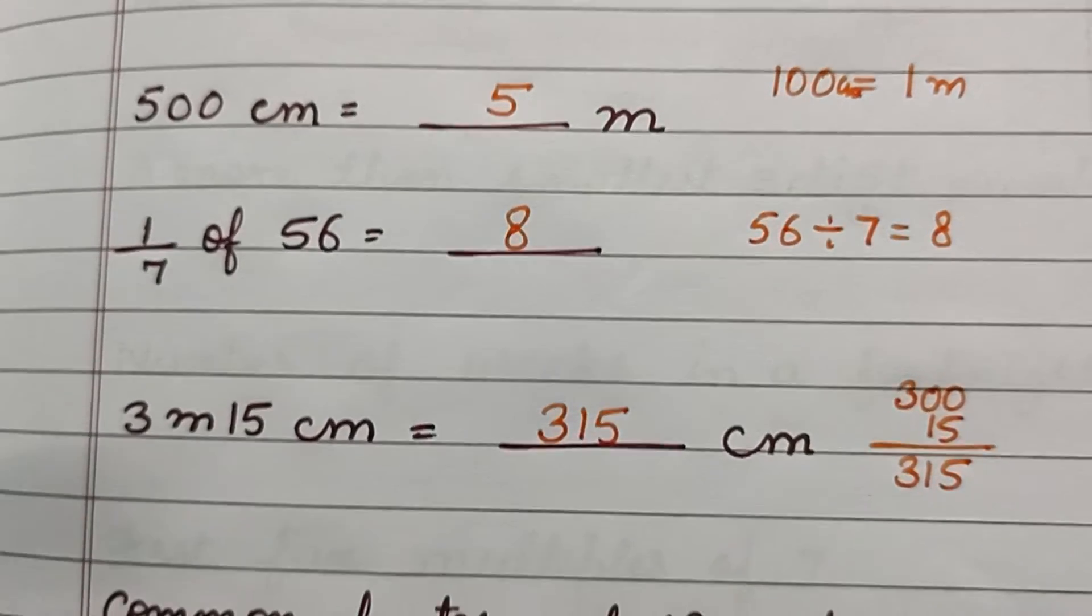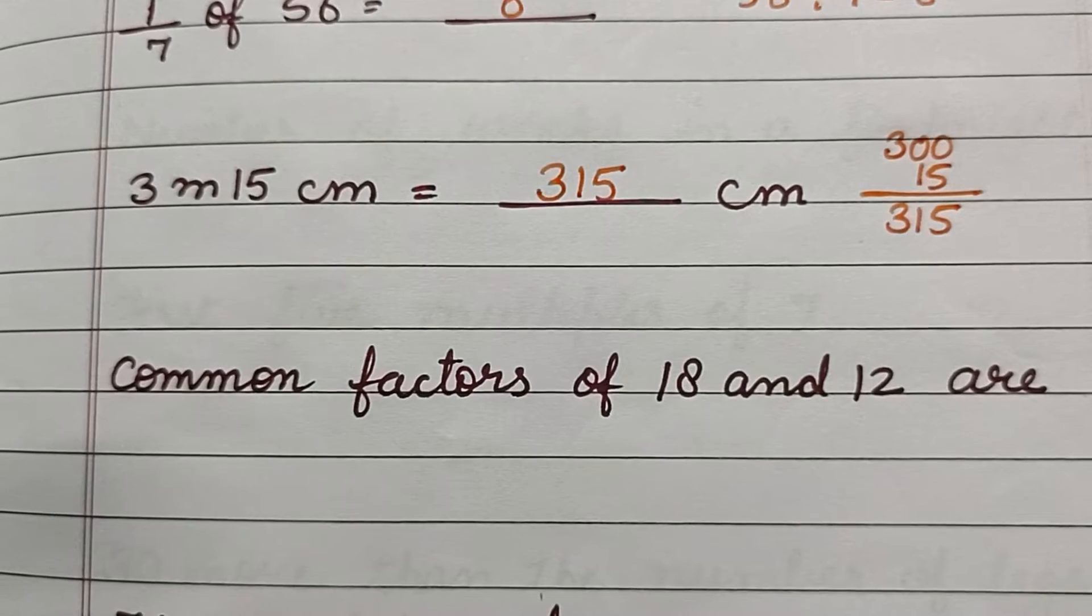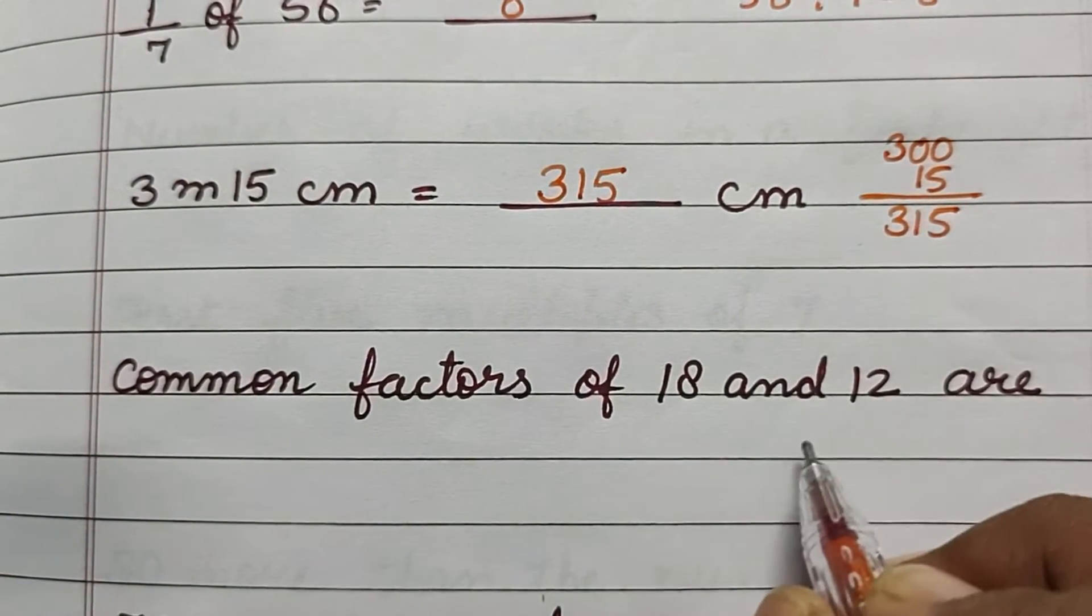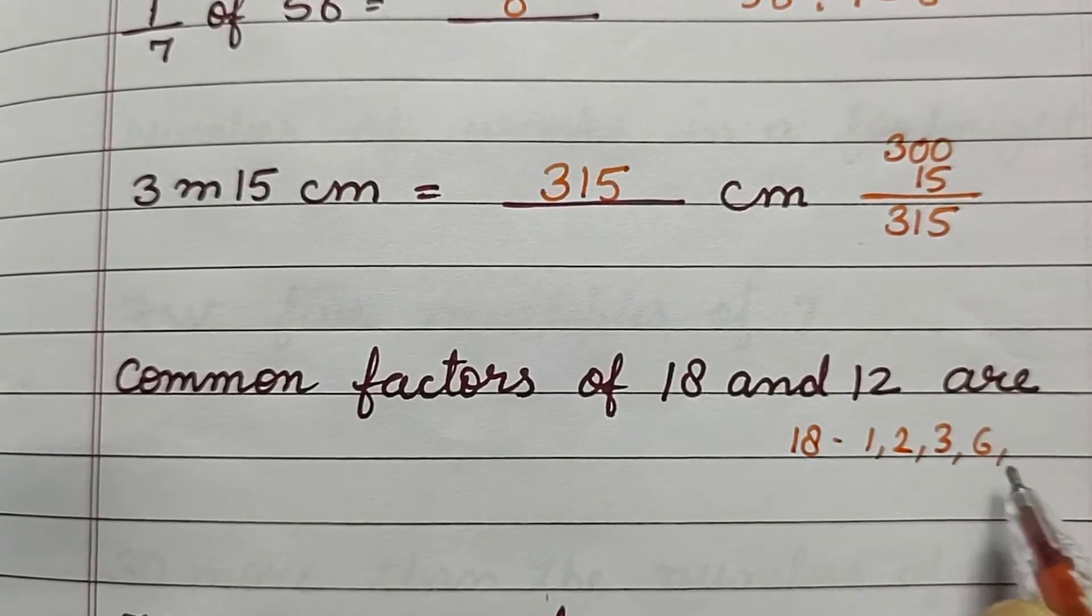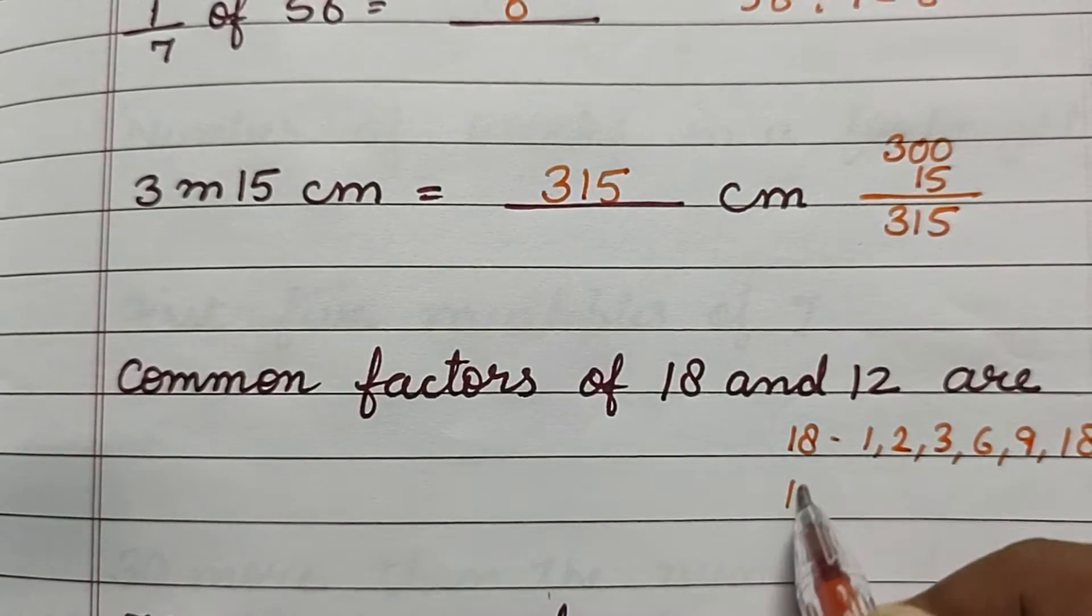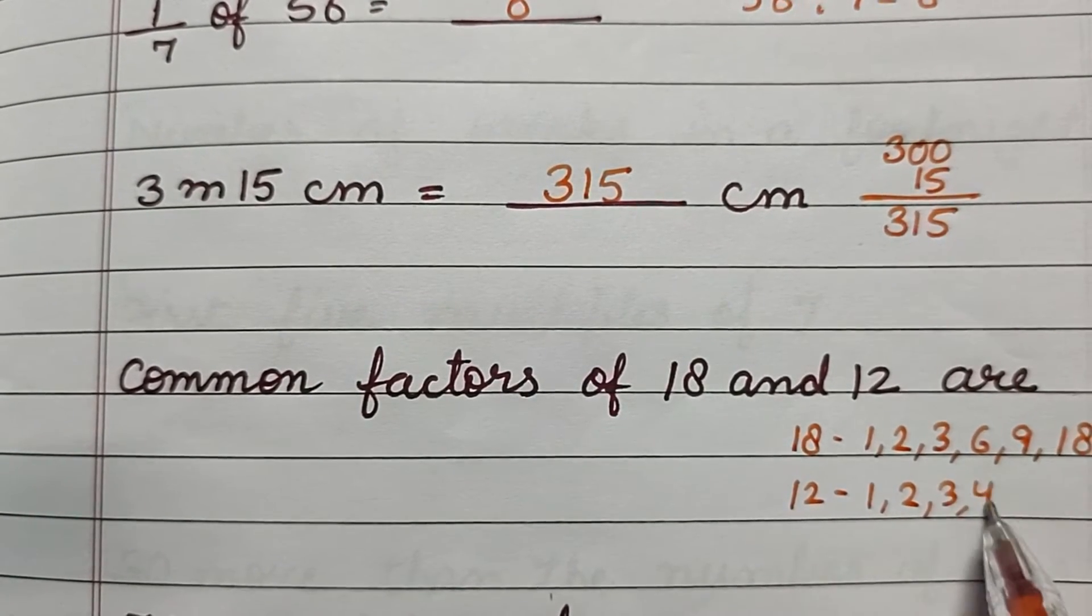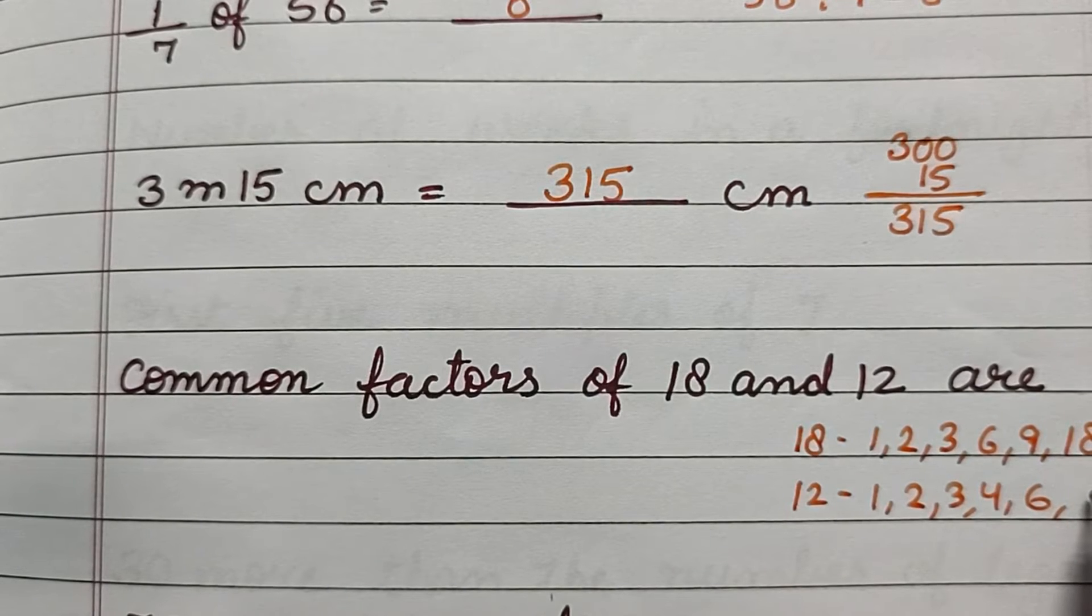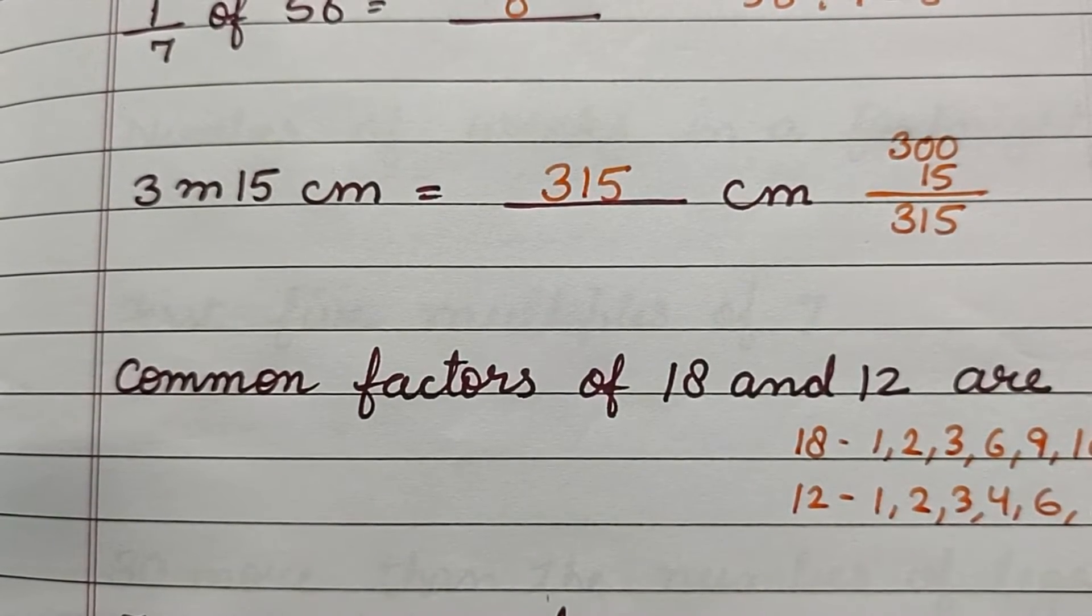Common factors of 18 and 12. First we have to write the factors of 18: that is 1, 2, 3, 6, 9, and 18. And factors of 12: 1, 2, 3, 4, 6, and 12. So the common factors are 1, 2, 3, and 6.